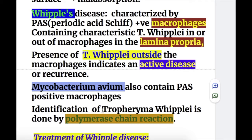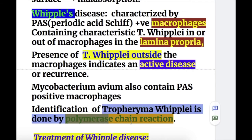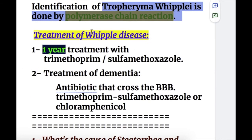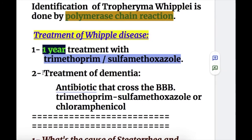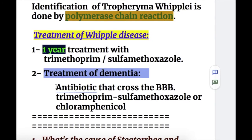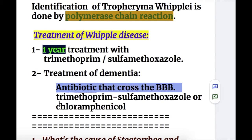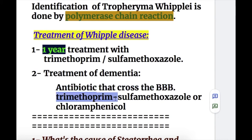Identification of Tropheryma whipplei is done by polymerase chain reaction (PCR). Treatment of Whipple's disease: initially with ceftriaxone or penicillin for two to four weeks, followed by one year of treatment with trimethoprim and sulfamethoxazole. Treatment of dementia requires an antibiotic that crosses the blood-brain barrier — trimethoprim plus sulfamethoxazole, or if not tolerated, chloramphenicol.